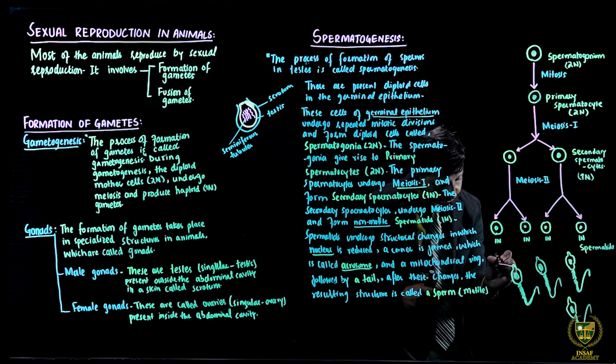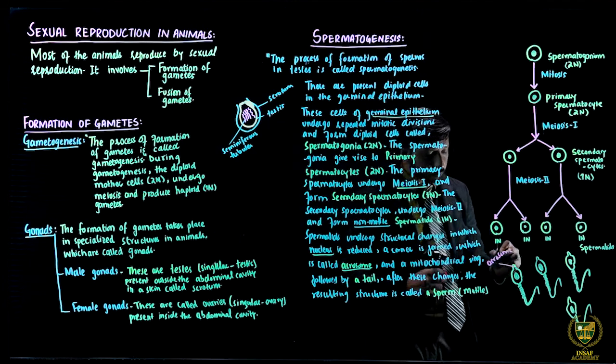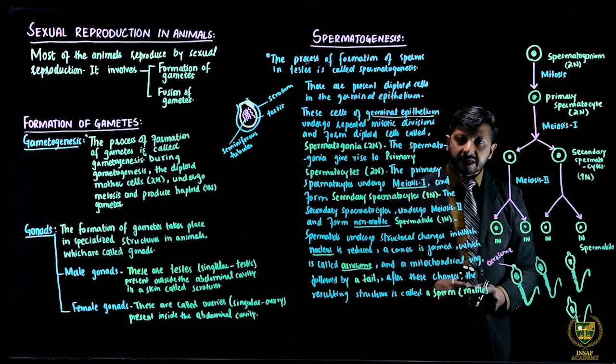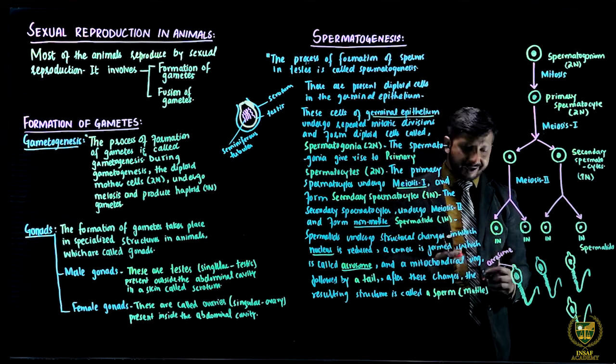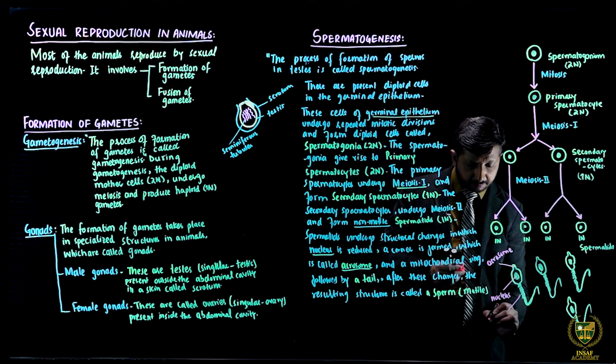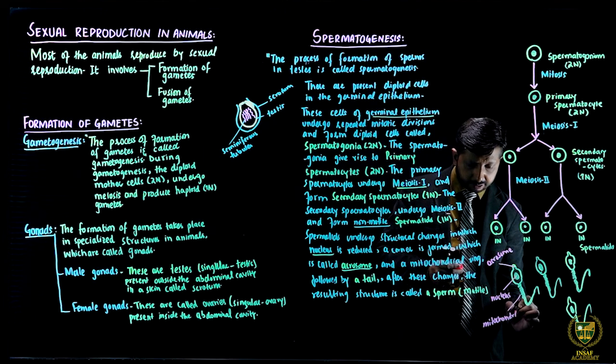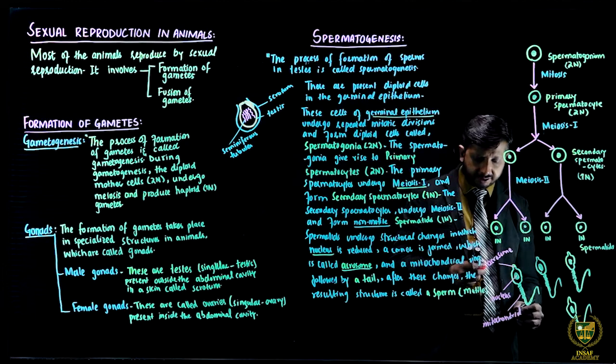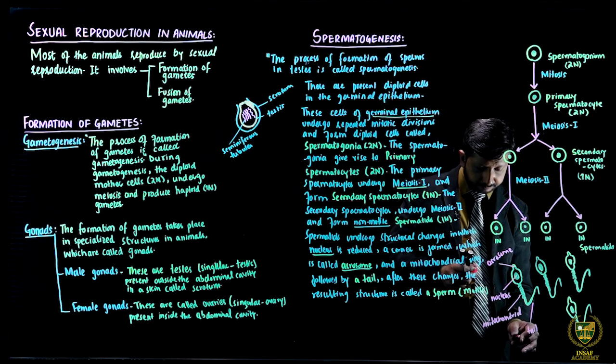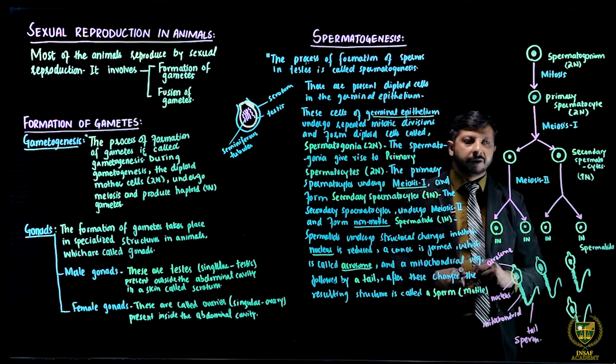Now I am going to label this. This corner structure that is formed is called acrosome. And dear students, what is the function of acrosome? When it fertilizes with the egg cell, the acrosome will release certain enzymes which will help in fusion with the egg cell. This is the nucleus, this is mitochondrial ring. This is a short diagram for drawing sperm. And this is its tail. This is the structure of sperm, which is motile.